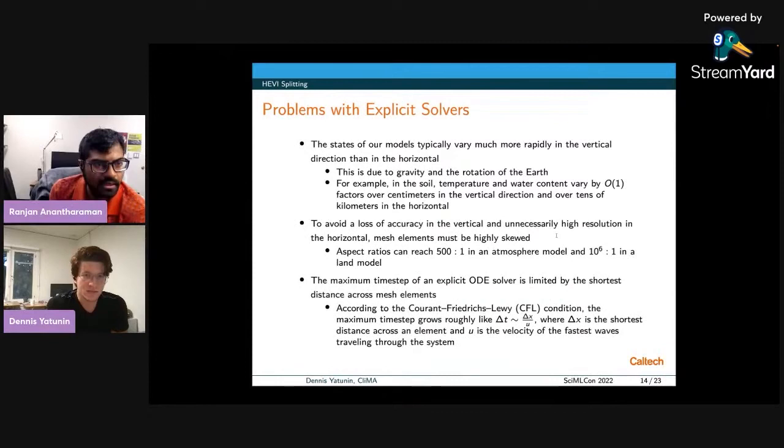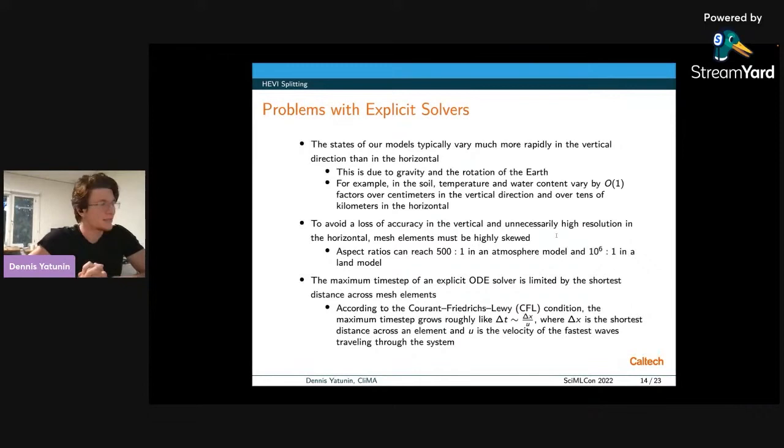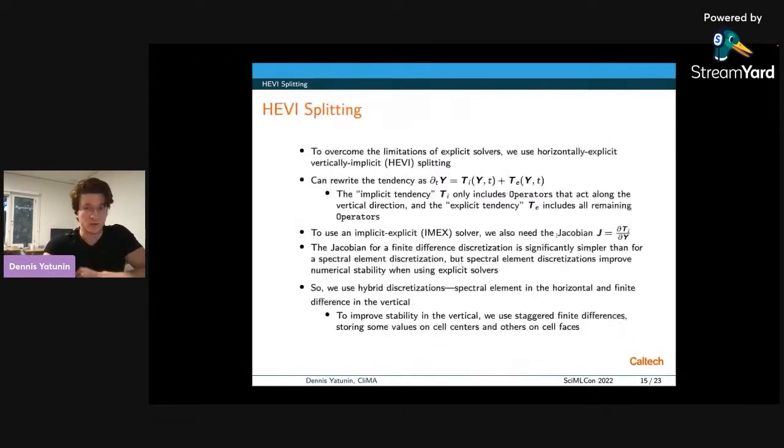So now moving on to why we can't just stick with explicit solvers. I'll skip the details of why exactly we have very skewed meshes, but suffice it to say, we have extremely skewed meshes with much smaller spacing in the vertical direction than in the horizontal direction. And that means that if we just use explicit solvers, we'll be very highly limited by the distance in the vertical direction. So we need to treat the vertical direction implicitly. To do that, we split our tendency into two pieces, an implicit and an explicit piece, with the implicit piece only including operators that act in the vertical direction. And the Jacobian for a finite difference discretization is much simpler than the Jacobian for spectral element discretization, which is why we end up using finite difference in the vertical and spectral element in the horizontal. We do still stick with spectral element in the horizontal because it's more numerically stable with explicit solvers.